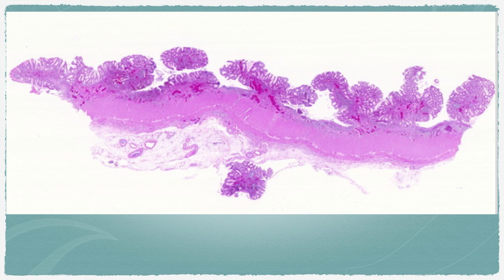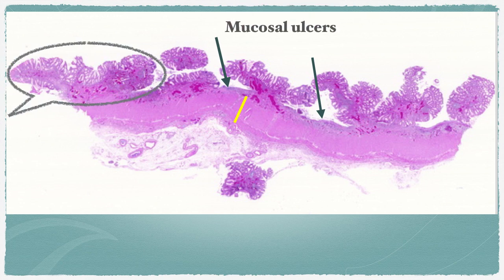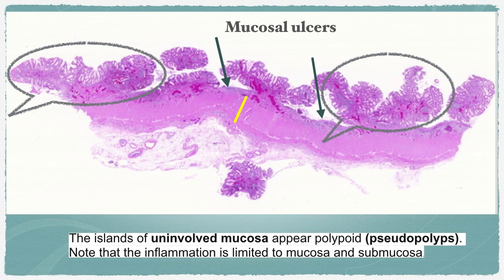This panoramic view shows a section of a bowel segment. When we examine the muscular layer of the bowel from left to right, we find that the muscle is intact — no transmural inflammation is seen. What we can appreciate from this photograph is multiple mucosal ulceration: areas without mucosa alternating with mucosa forming polypoid-like structures. This means that the inflammation is confined to the mucosa and submucosa with the presence of pseudopolyps — therefore, this is a feature of ulcerative colitis.